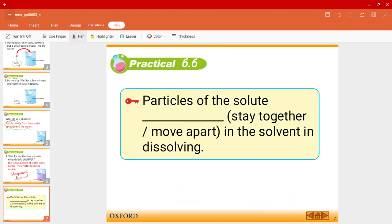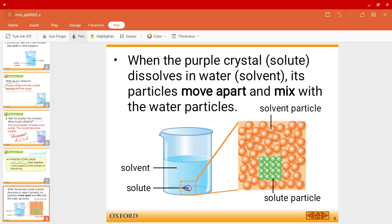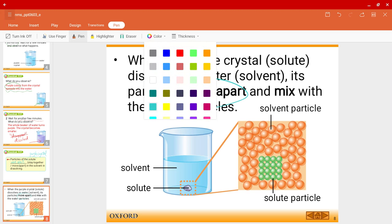So particles of the solute, in this case which was the purple crystal, did it stay together in the solvent or did it move apart? Of course as we just saw, it spread right, so it moves apart. So particles of the solute will actually always move apart in the solvent during dissolving. When the purple crystal dissolves in the water, its particles would move apart and mix with the water molecules.